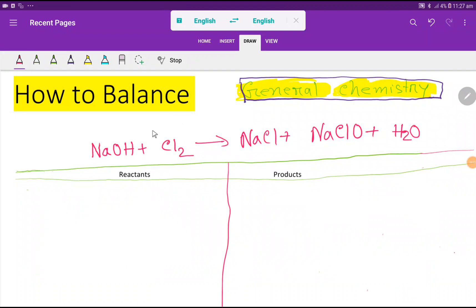Welcome to this class. Today we are going to balance this reaction. This is sodium hydroxide, this is chlorine, this is sodium chloride, and this is sodium hypochlorite. Sodium hypochlorite CLO is a polyatomic ion which is called hypochlorite ion.